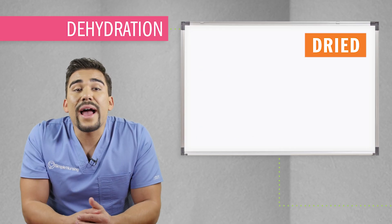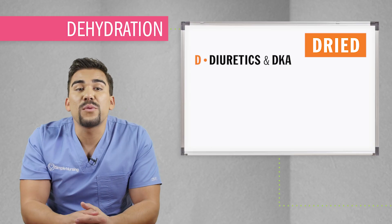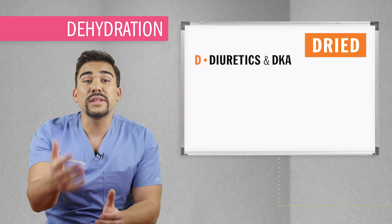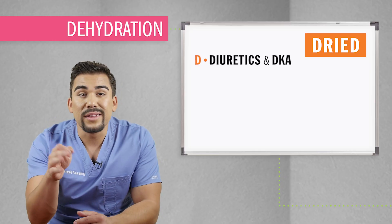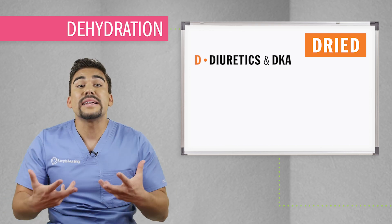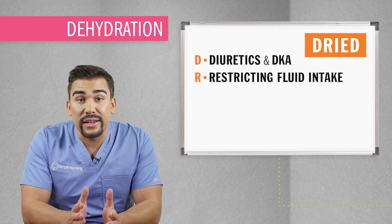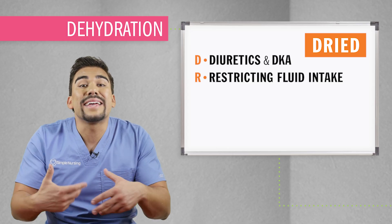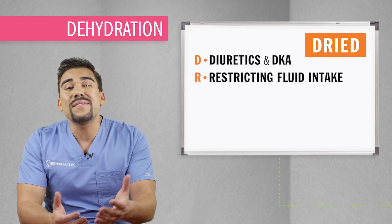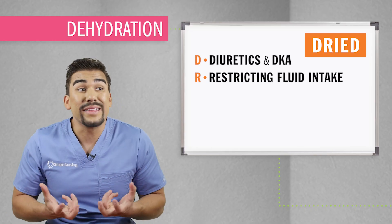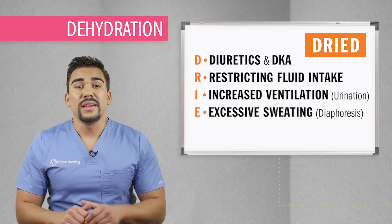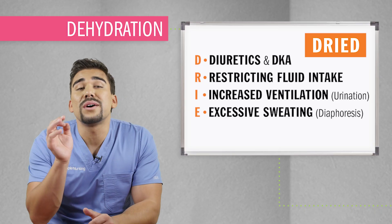We also use the acronym DRIVE. D is for diuretics, as mentioned before, but also diabetic ketoacidosis — water leaves the body because of polyuria, as the body tries to pee out that high concentration of thick sugar in the bloodstream. R is for restriction of fluid intake, normally when patients don't take in enough fluids — usually with our elderly populations. I is for increased ventilation, also called hyperventilation. E is for excessive sweating, also called diaphoresis.